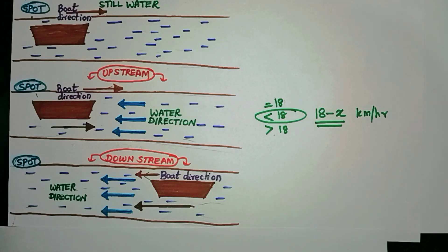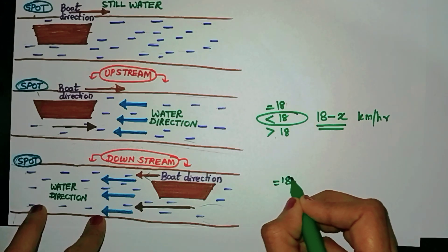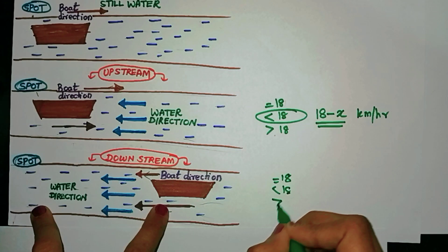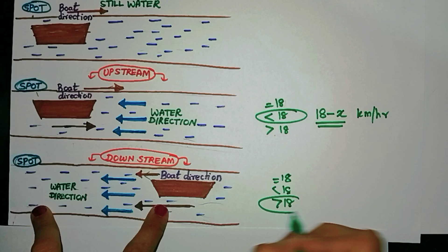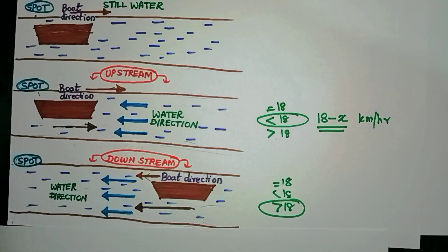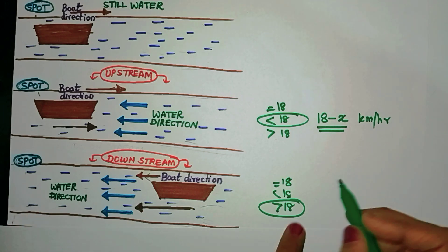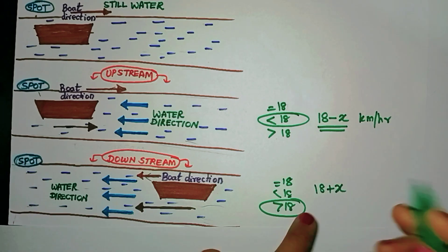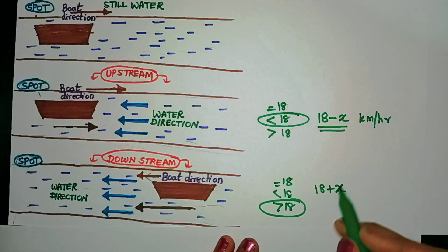In this case, what will be the effective speed of the boat? Will it be equal to 18, less than 18 or more than 18? It will be more than 18 because now the boat is being helped by the water flow since they are both flowing in the same direction. Now the speed of the boat will be 18 plus x km/hr.